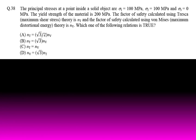Question 38 is a 2-mark question with options, so negative marking applies. The principal stresses at a point inside a solid object are: σ1 = 100 MPa (tensile), σ2 = 100 MPa (tensile), and σ3 = 0. The yield strength of the material is 200 MPa. The factor of safety using Tresca (maximum shear stress) theory is Nt, and using Von Mises (maximum distortion energy) theory is Nb. Which relation between Nt and Nb is correct?